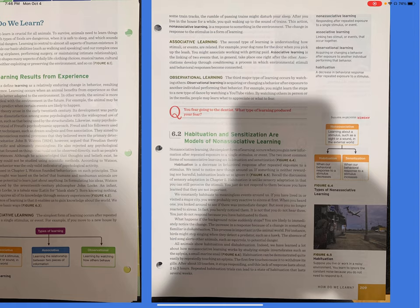Section 6.2: Habituation and sensitization are models of non-associative learning. Non-associative learning, the simplest form of learning, occurs when you gain new information after repeated exposure to a single stimulus or event. The two most common forms of non-associative learning are habituation and sensitization, Figure 6.4. Habituation is a decrease in behavioral response after repeated exposure to a stimulus. We tend to notice new things around us. If something is neither rewarding nor harmful, habituation leads us to ignore it, Figure 6.5.